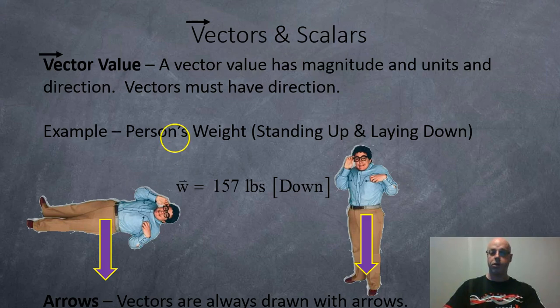So for example, the person's weight standing up or laying down. So in this case here the person is laying down and they have weight of 157 pounds down and when they're standing up they have the same weight of 157 pounds down.